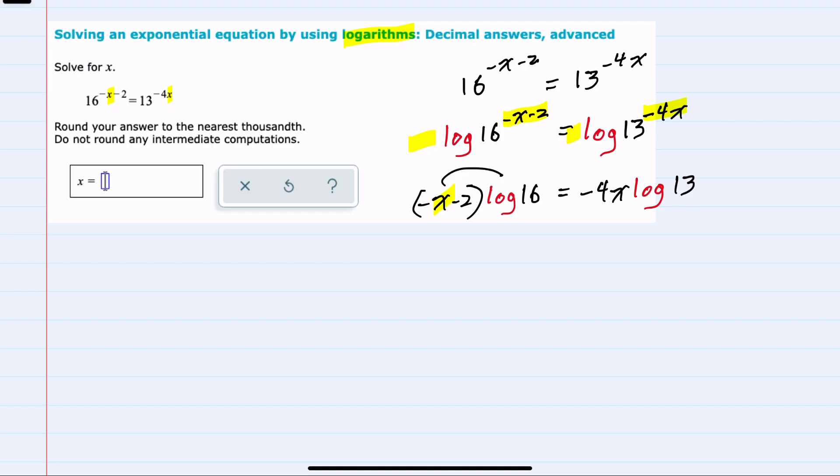Distributing would give us negative x log 16, and then negative 2 times log 16. Bringing down the other side, we can see now that we have three terms,